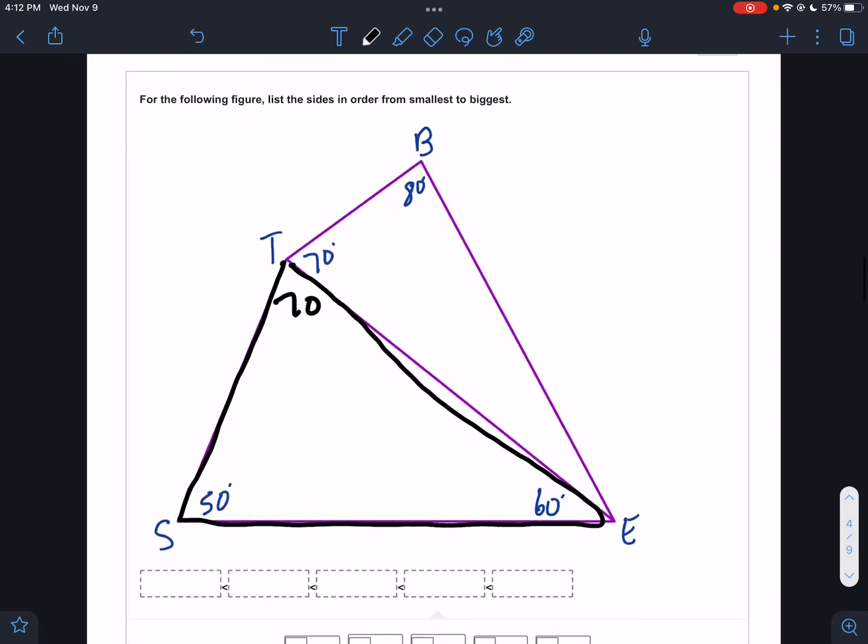Next one, this is a troublesome one. I told you it's guaranteed to be on your test. Here I have this triangle, focusing on just the black triangle, this corner would be 70. We are going from smallest to biggest. The smallest one would be TE, the second one would be ST, and the biggest one would be SE. On the orange triangle's 80 and 70 is 150, this corner has to be 150, this corner has to be 30. From smallest to biggest, smallest would be TB.